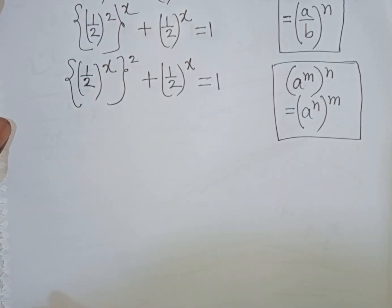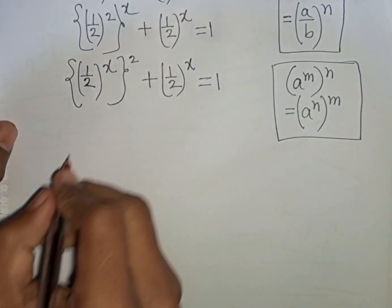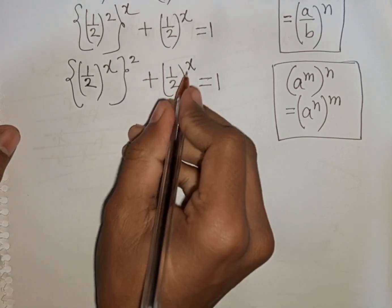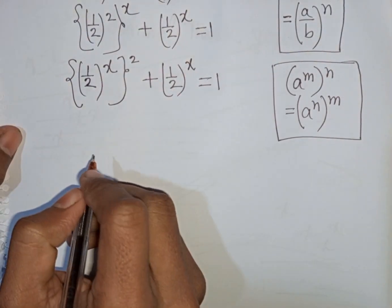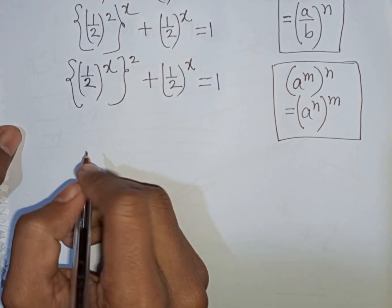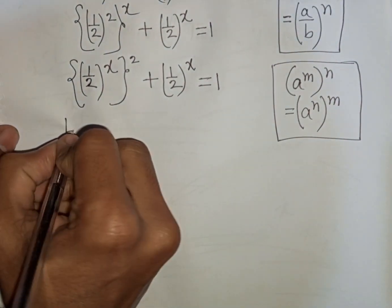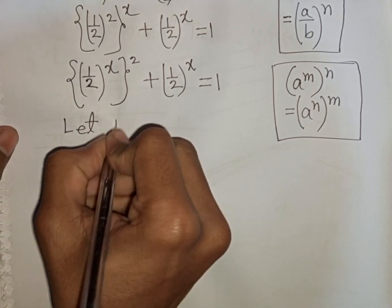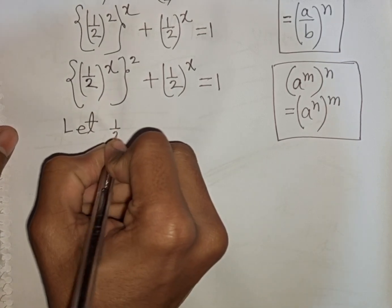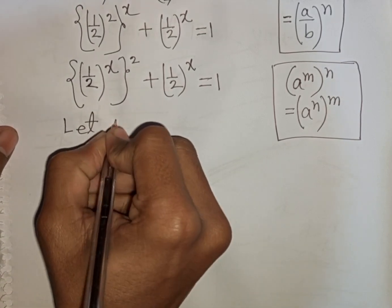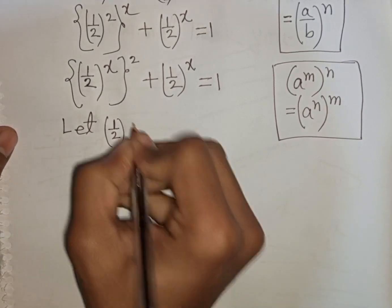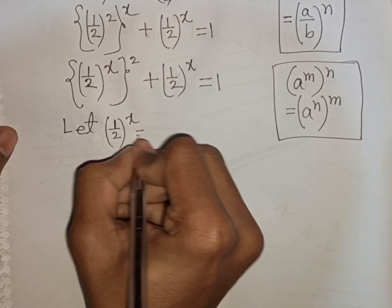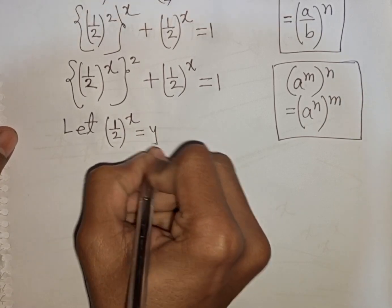We see that (1 over 2) bracket power x and (1 over 2) bracket power x — both terms are the same. So let (1 over 2) bracket power x be substituted by y.